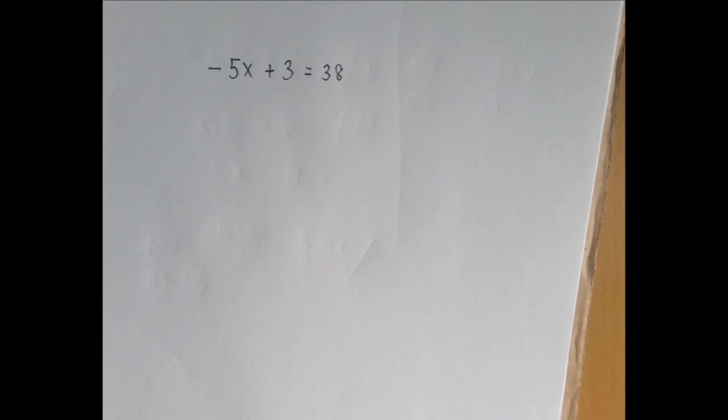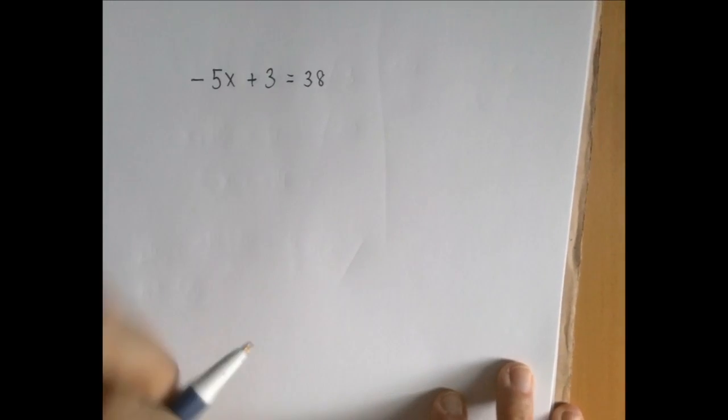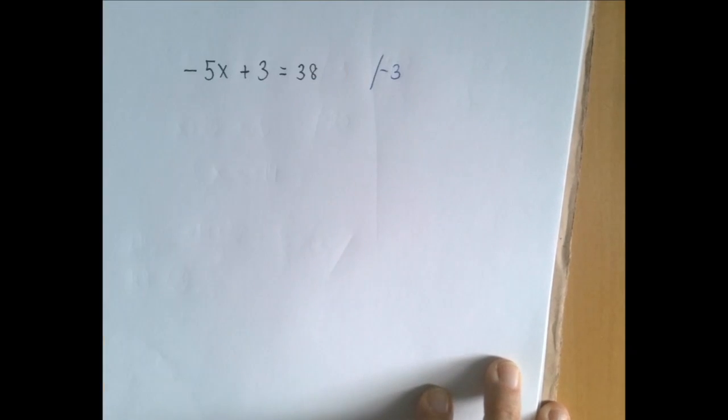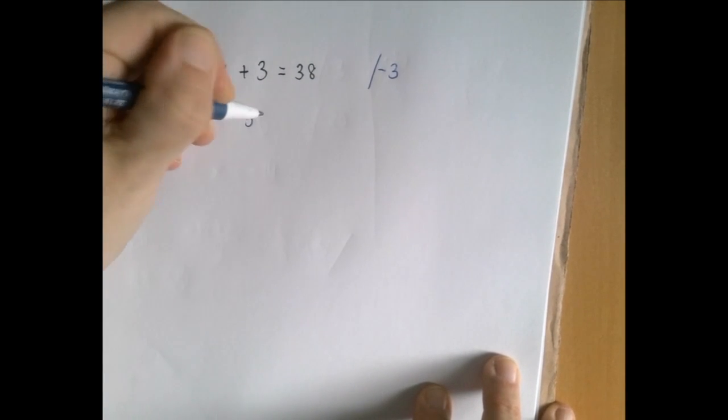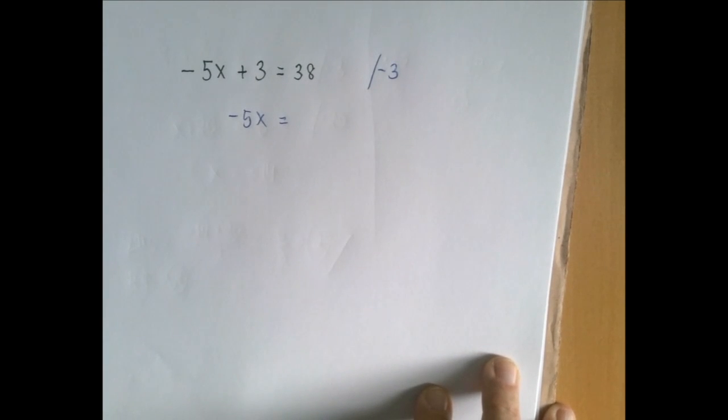So the last thing that happened was an addition of 3. We're going to undo that by subtracting 3 from both sides. Then the left-hand side becomes negative 5x. The right-hand side becomes 38 minus 3 is 35.